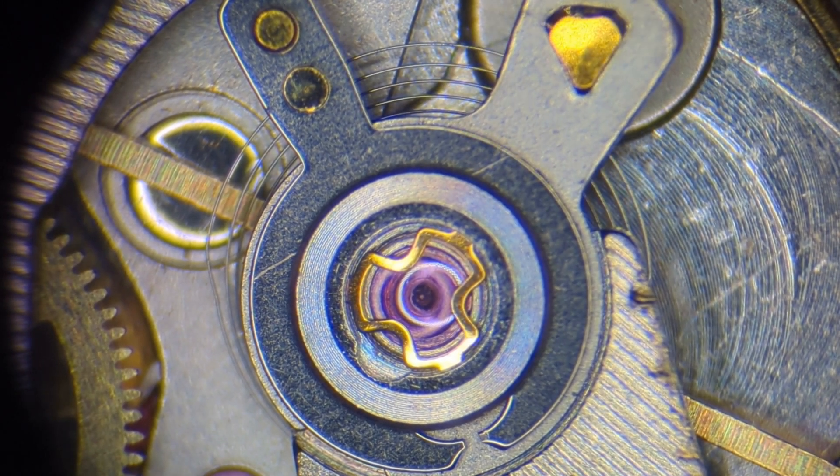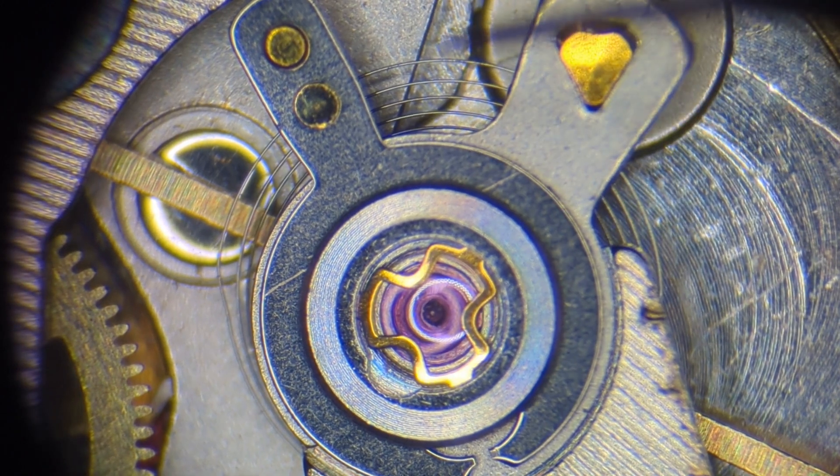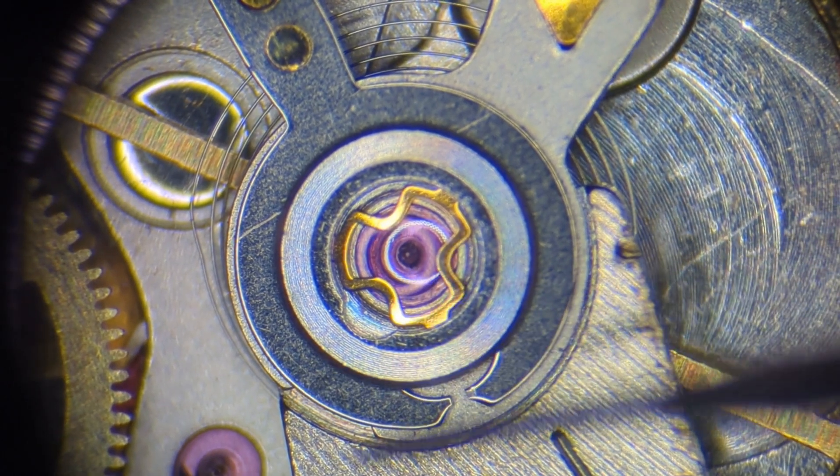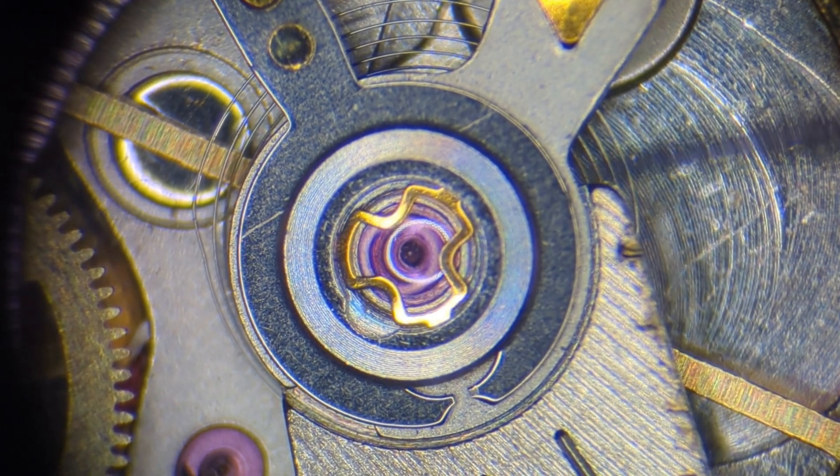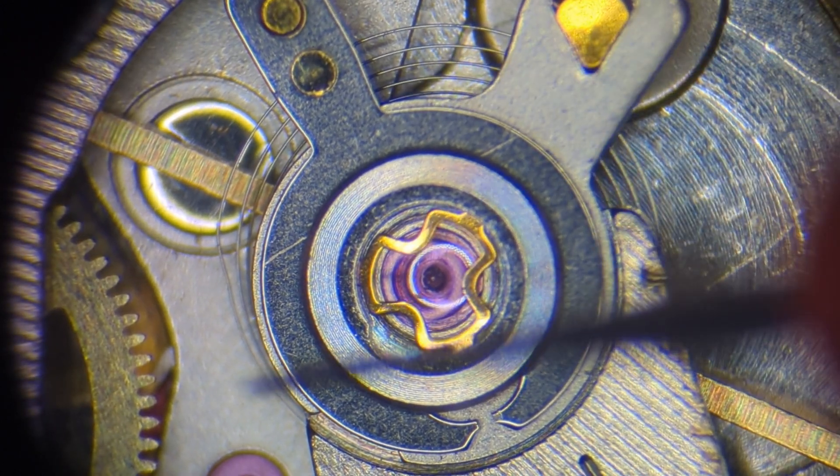The watch under experiment today is a vintage Seiko caliber 6106, but the way I fix it is applicable to other automatic watches. This approach is far not a cure for all kinds of bent hairsprings.